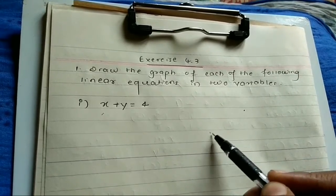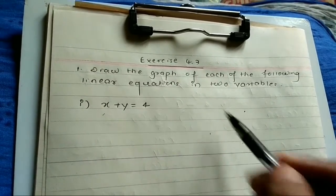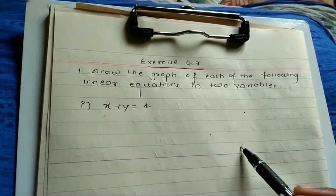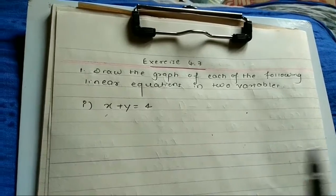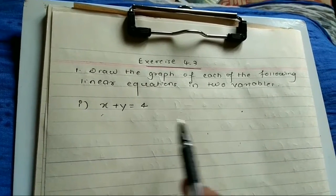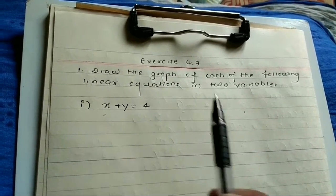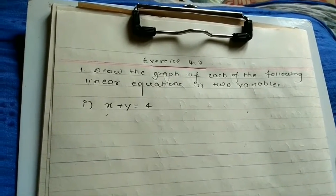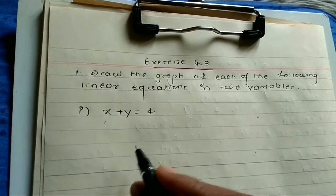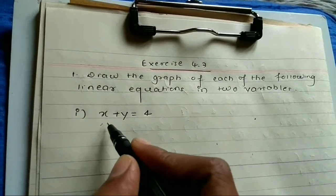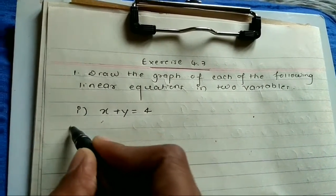Suppose two points are meeting but the third point is going somewhere else and you are getting a zigzag line, then you have gone wrong somewhere. So like this you can confirm the answer. We will find out three values of X and their respective values of Y.